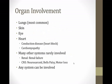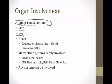In sarcoidosis, granulomas form all over the body. The lungs are the most common site of organ involvement, which is why we're discussing this in the pulmonary modules. You can also get involvement of the skin and the eye. Sarcoid can sometimes involve the heart, where granulomas can block the conduction of electrical activity, leading to heart blocks.